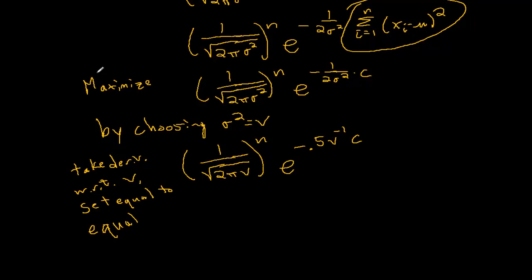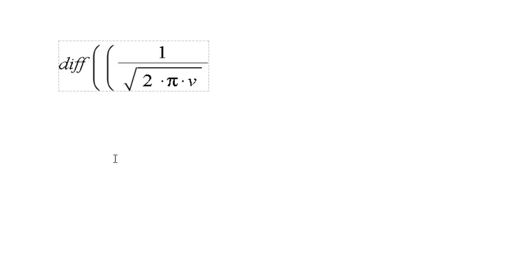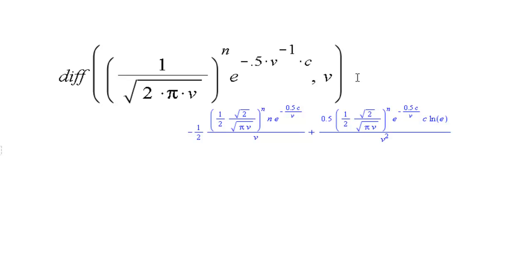I'm going to pull up Maple to do that. I'm going to differentiate that expression using the diff command. The expression is 1 divided by the square root of 2π times v, raised to the power of n, times e to the power of negative 0.5 times v to the power of negative 1, times c. I need to differentiate with respect to v. Since I have more than one variable — v and c — I need to tell Maple what to differentiate with respect to. The result is rather nasty because we have to apply a product rule with all kinds of chain rules, but since we have a computer algebra system it's not too hard to work with.